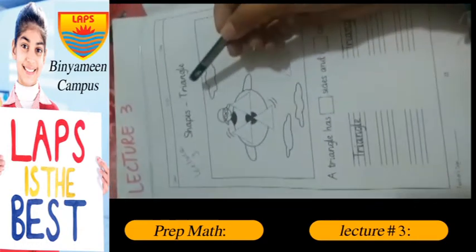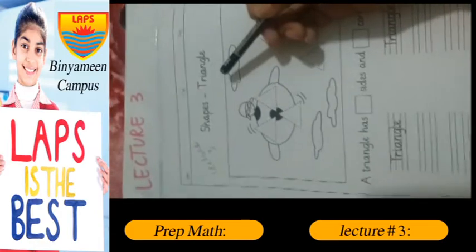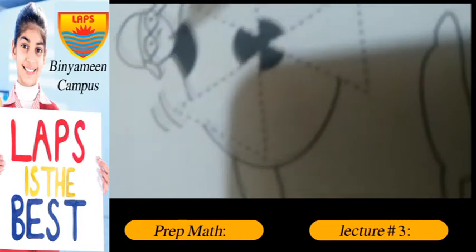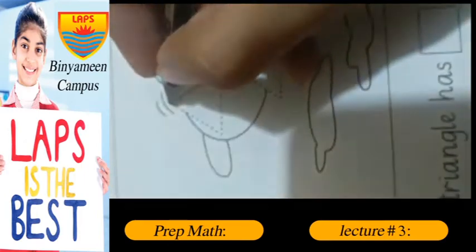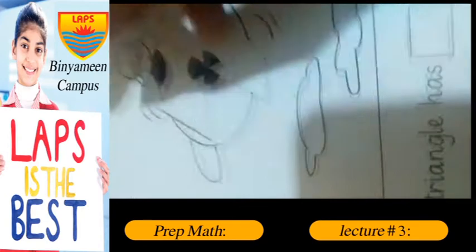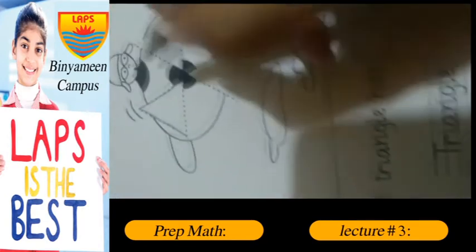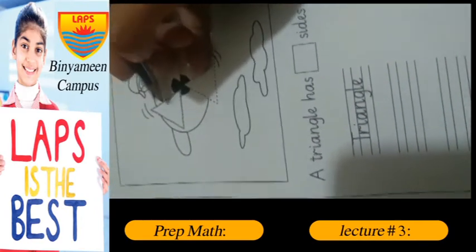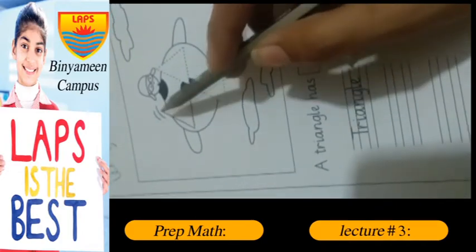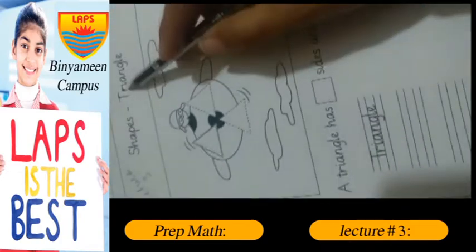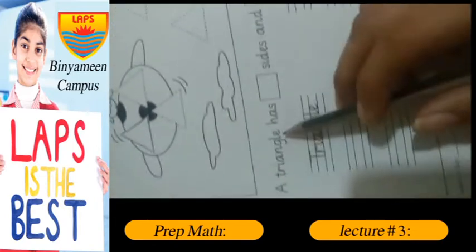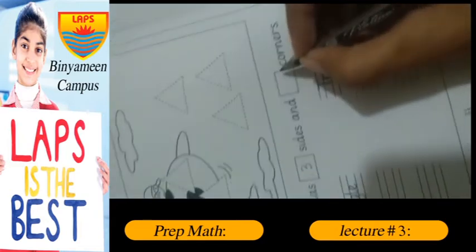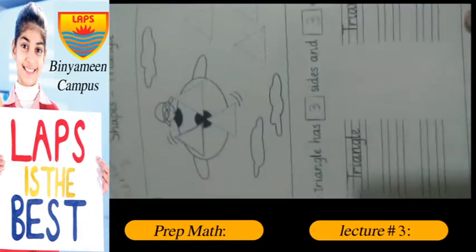We have made shapes - we have made circle and square. Today is our triangle. What is the shape of triangle? This is the shape of triangle. Three sides - one, two, three sides - and three corners - one, two, three corners. A triangle has three sides and three corners.